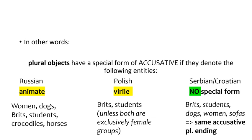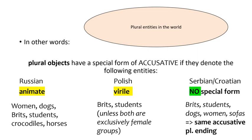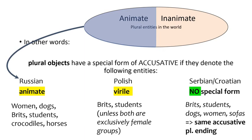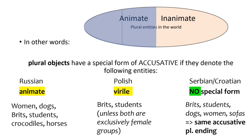We can conceptualize the distinction in the following way. Our South Slavic representative does not care whether plural objects are alive or not, nor whether they have a human male. Russian divides its plurals into those that breathe and those that don't — the former set enjoys a special accusative form. Polish is even more selective: from the set of animate plurals, it marks as special those that include an entity with specific biological equipment.